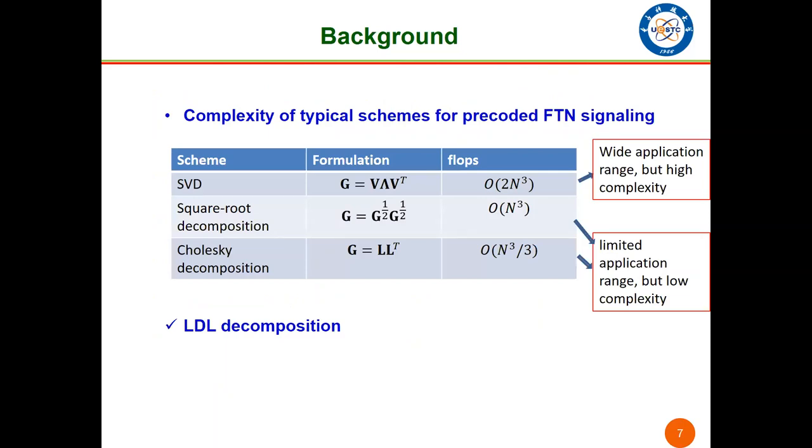The complexity of typical schemes used in pre-coded FTN is shown in the table. As we can see, SVD has the most complexity, but it is applicable for any feasible tau. Other two schemes have low complexity but a limited application range of tau. It is valuable to find a scheme that has low complexity and large application range of tau at the same time.